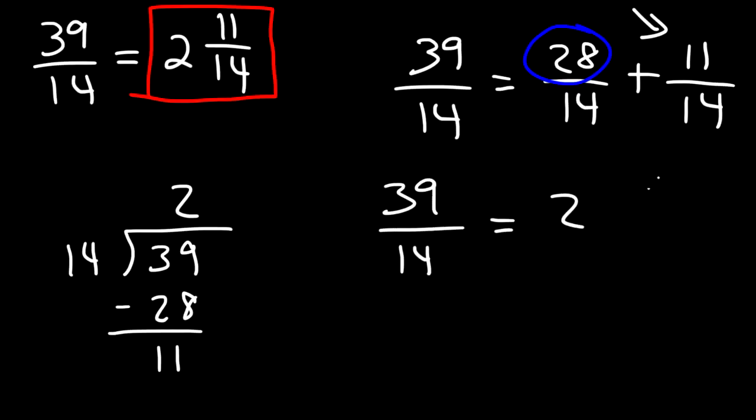28 divided by 14 is 2. So you get 2 plus 11 over 14, which is the same as 2 and 11 over 14. So that's the final answer.